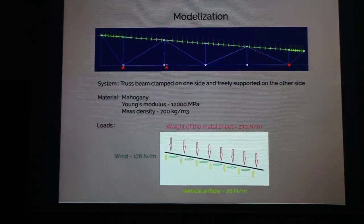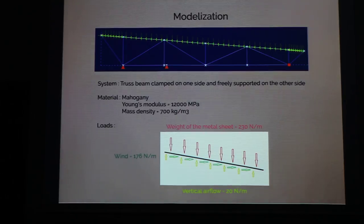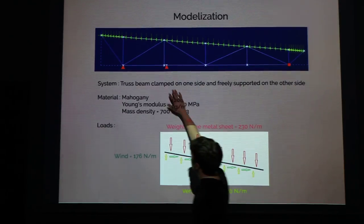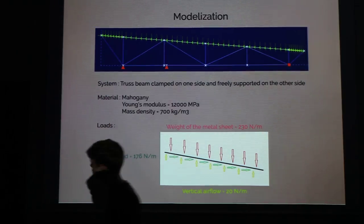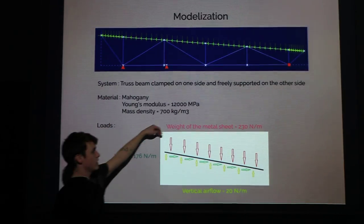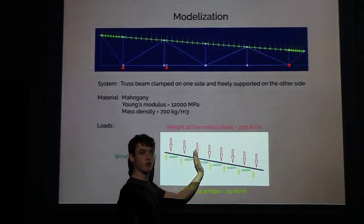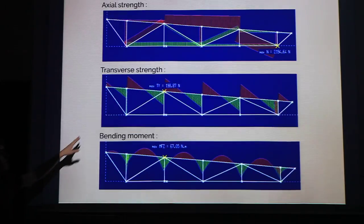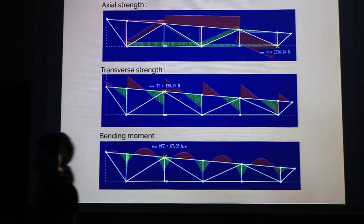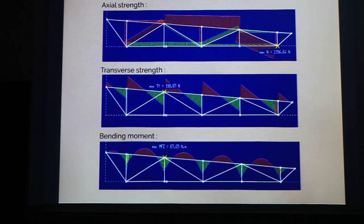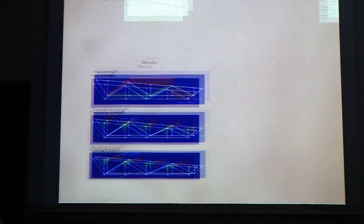We also studied the structural stability of the timber truss on each classroom using software modelling. Here you can see the walls of our school and one of the pillars in front of it. Modelling with metal sheets, wind, and air flow forces from below, we found that at the weakest points, the force is around 2,000 Newtons — which is very manageable compared to the physical characteristics of the wood we use.